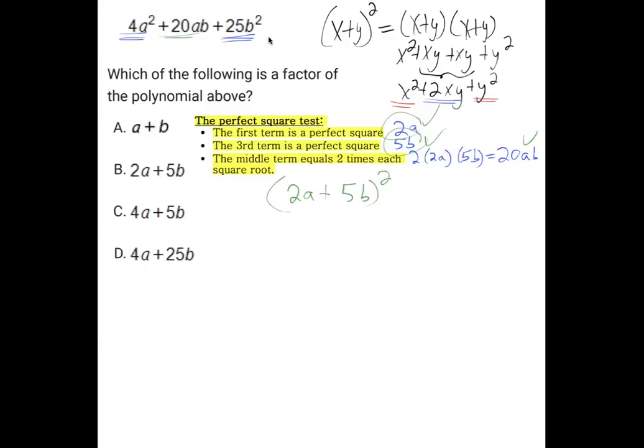And the only difference would be if we had a minus sign right here, then you would end up with a minus sign right there. But everything else would be the same. So this factors to 2a plus 5b all squared. And that's why 2a plus 5b is one of the factors. And the other factor is the other 2a plus 5b.